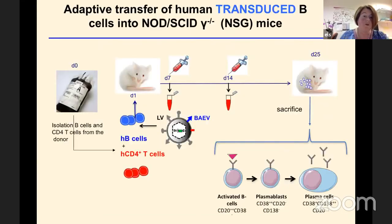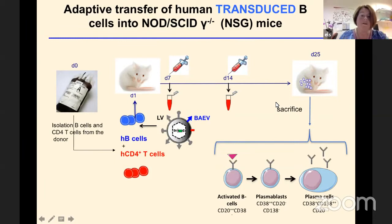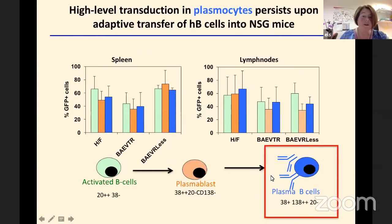We established a model in the lab where B cells differentiate into plasma cells in vivo. We isolated human B cells and CD4 cells from the same donor, transduced the B cells with a baboon pseudotyped lentiviral vector, and infused both populations into NSG mice, which push towards plasma cell differentiation. The plasma cells that developed in these humanized mice showed high-level transduction overall, with activated B cells and plasma cells all highly transduced.